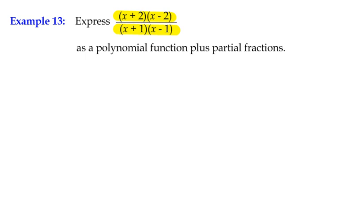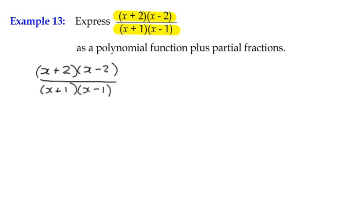So we have (x+2)(x-2) divided by (x+1)(x-1). The numerator (x+2)(x-2) follows the difference of two squares pattern, so by inspection we get x² - 4. And in the same way, (x+1)(x-1) gives us x² - 1.